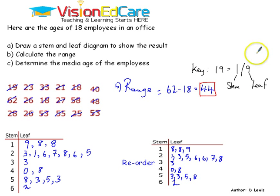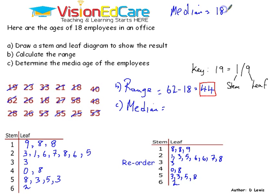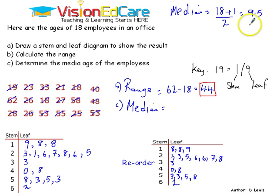Now we are going to determine the median from the table. To find the median we need to find the median position. We look at how many people were in the survey — there were 18 employees. So we have 18 plus 1 divided by 2. The median position is 19 divided by 2, which is 9.5. So the median position from the ordered stem and leaf diagram is 9.5.